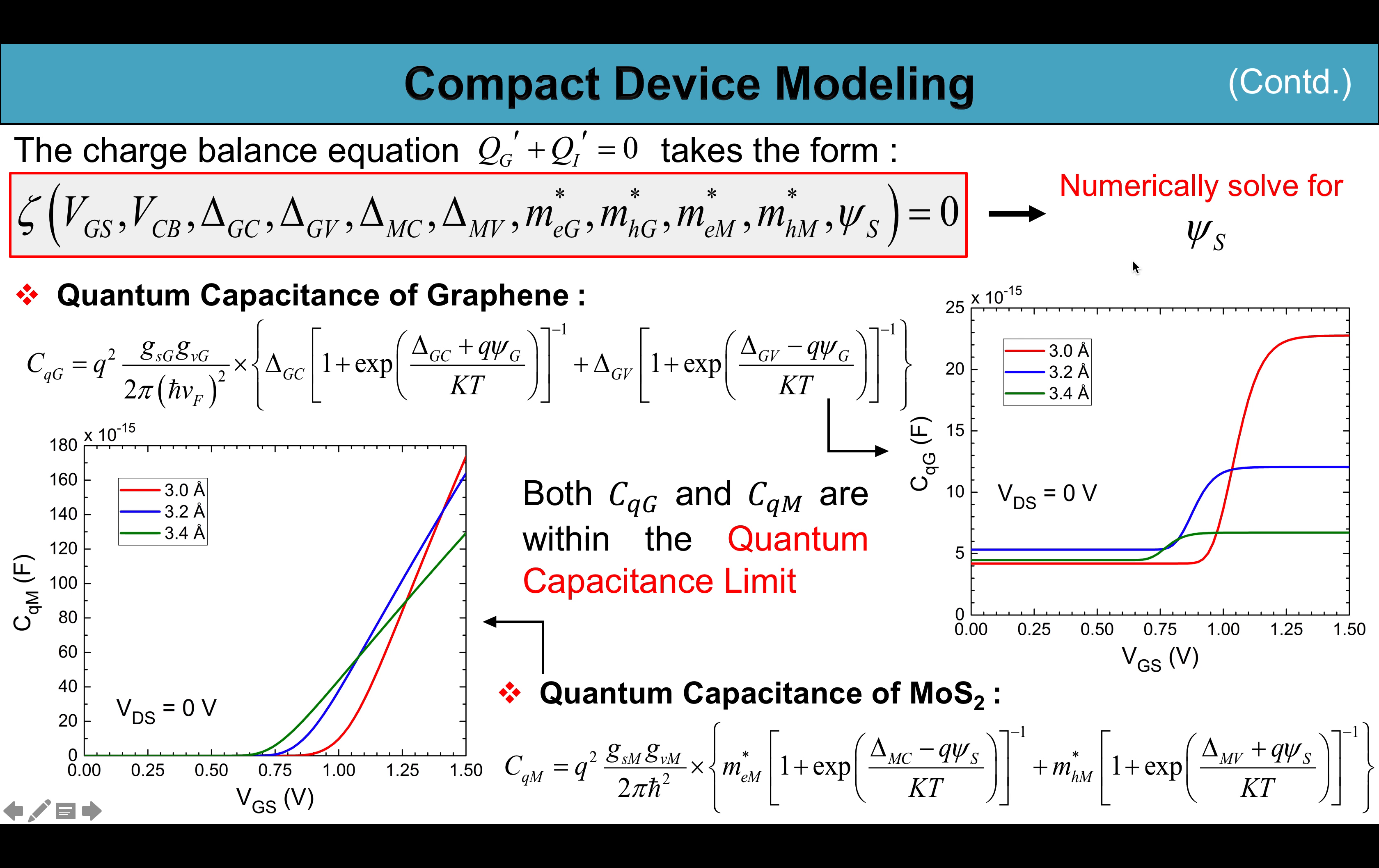After getting the values of psi s and QI', we get the quantum capacitance of graphene as shown in the figure and the formula is given. Also the quantum capacitance of MoS2 is obtained in a similar way. Both CQG and CQM operate within the quantum capacitance limit.